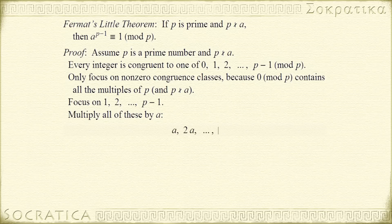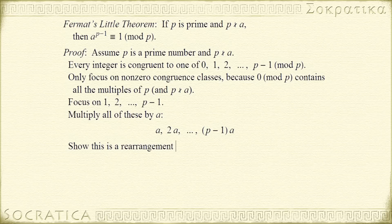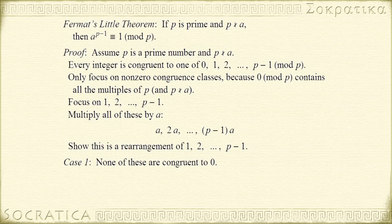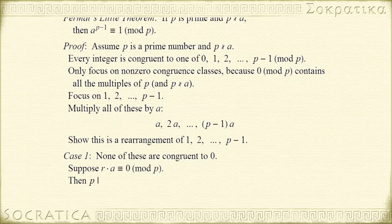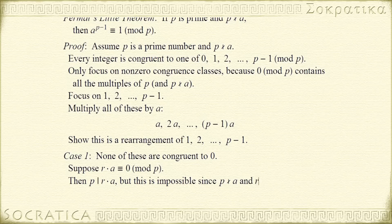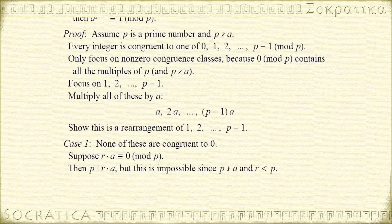We get a, 2a, on and on up to (p minus 1) times a. Now let's show this is nothing more than a rearranging of the congruence classes 1, 2, 3, on and on up to p minus 1. First, we're going to show that none of these are 0. If one of these were 0, that means p would have to divide it. So suppose r times a was congruent to 0 — that means p divides r times a. Well, we know p does not divide a, and p can't divide r because r is less than p. So p cannot divide the product, meaning none of these are congruent to 0 mod p.